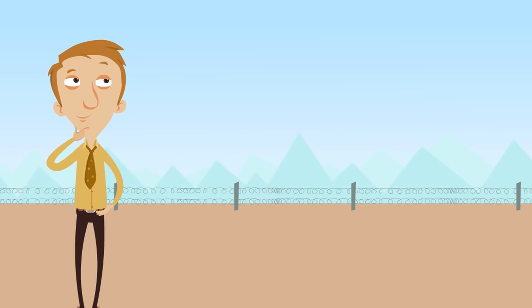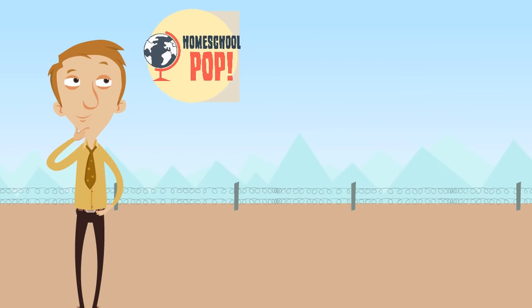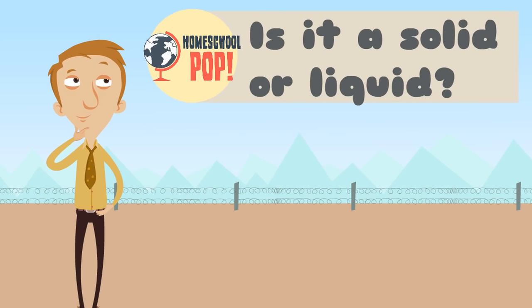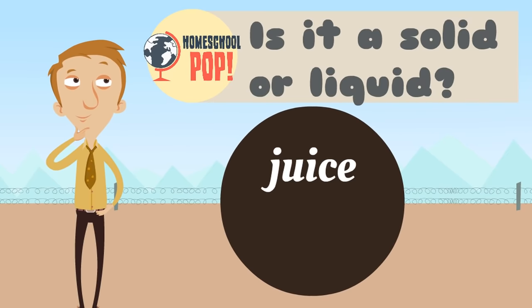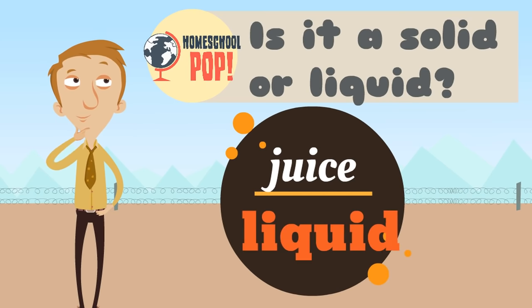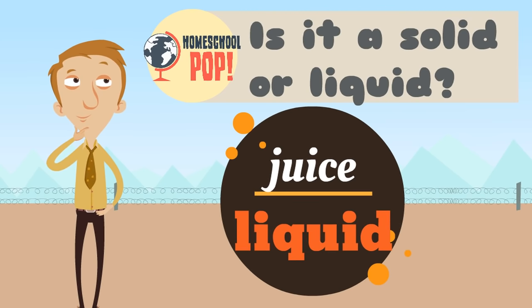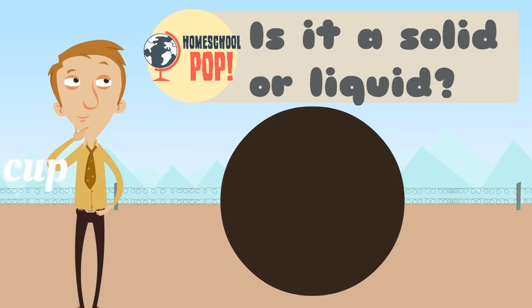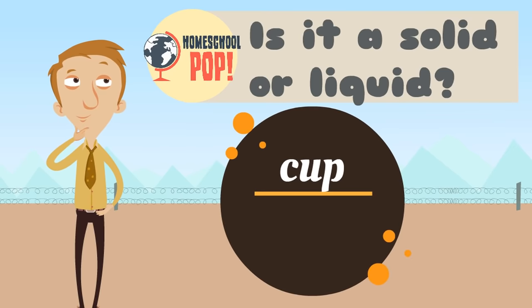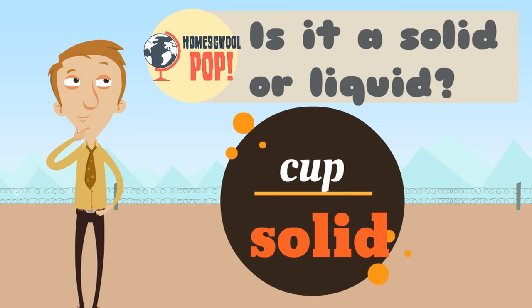I think you're ready to handle this. We're going to play a quick game to figure out if these items are solid or liquid. Our first one: juice. Solid or liquid? Juice is a liquid — it takes the shape of its container. How about a cup? Is a cup solid or liquid? It's solid — it has its own shape.